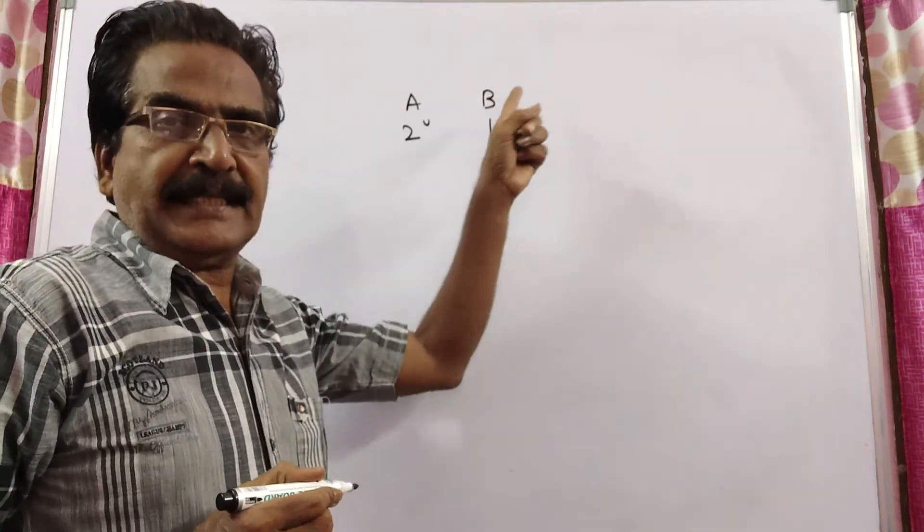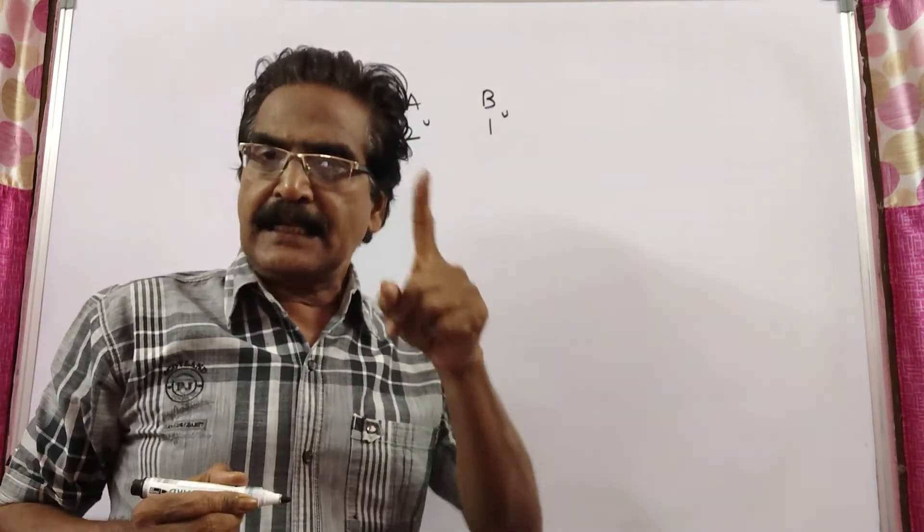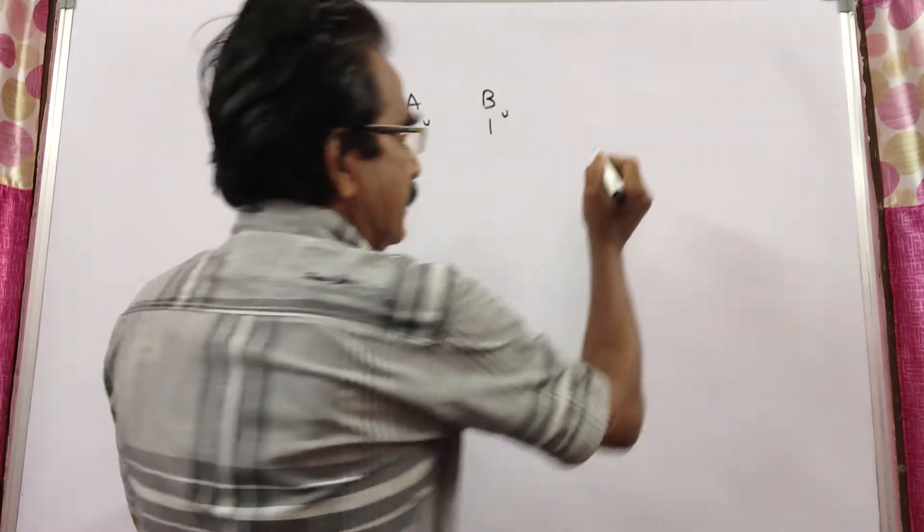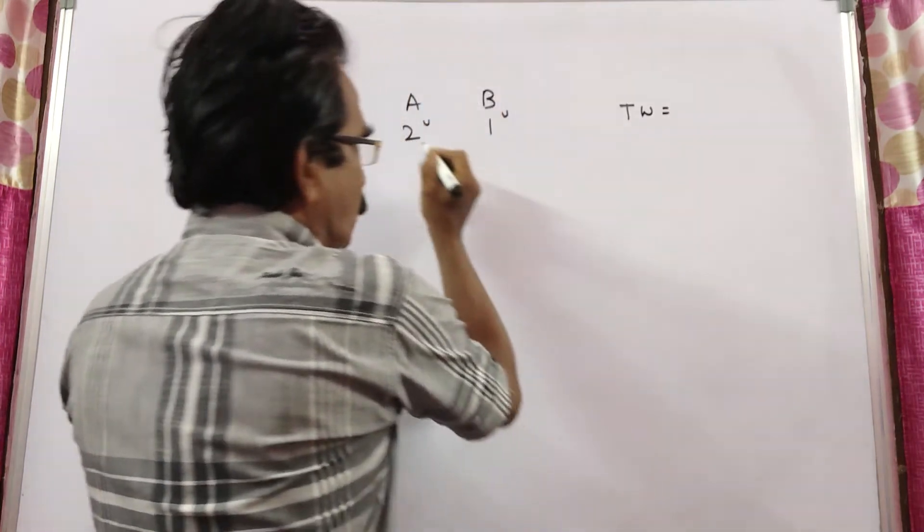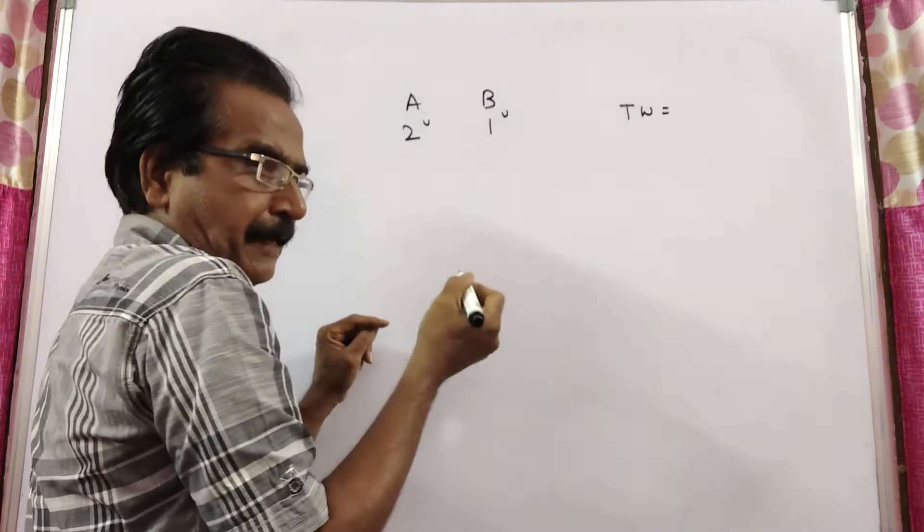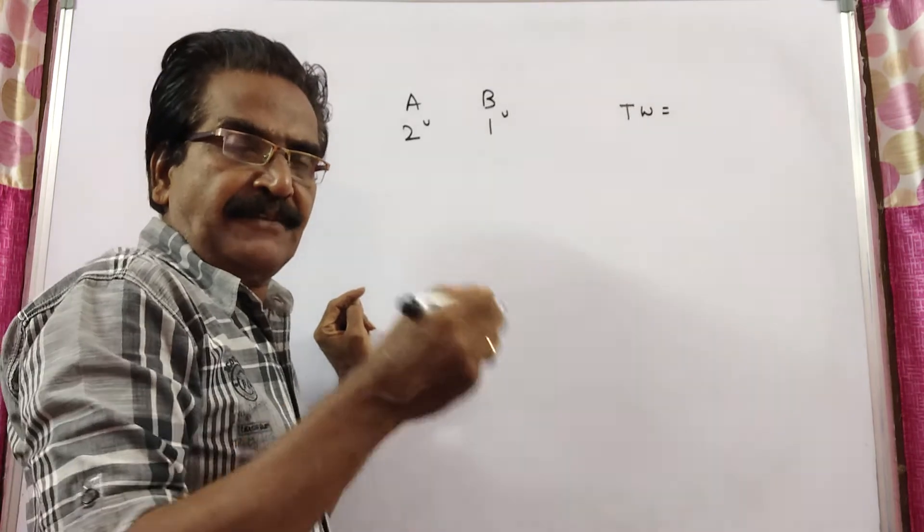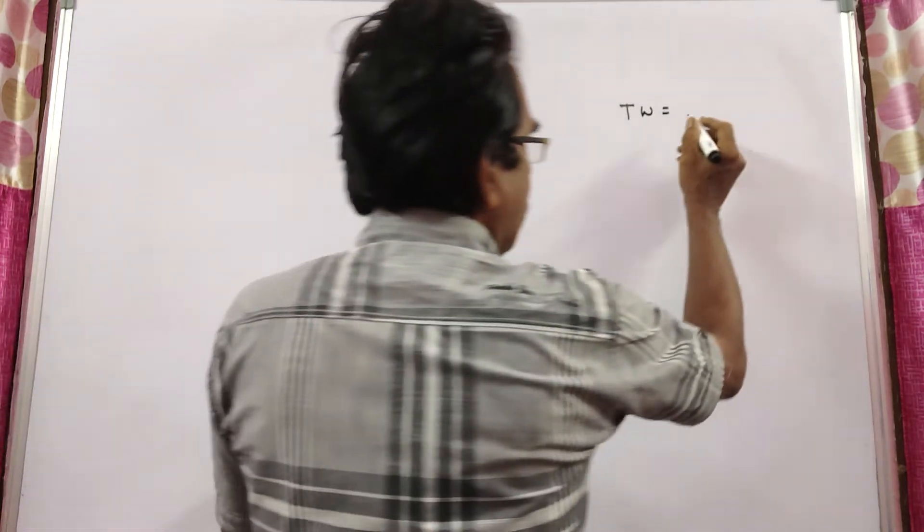Then A plus B together can do 3 units of work. They completed the work in 15 days. That means, the total work is equal to 3 units per day. A plus B together can do 3 units per day. They completed the work in 15 days. Means, the total work must be 15 into 3, 45 units.